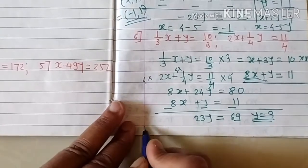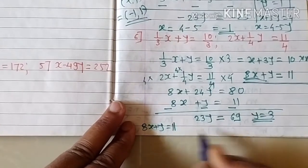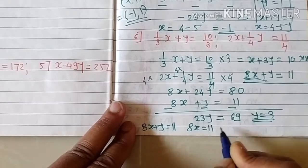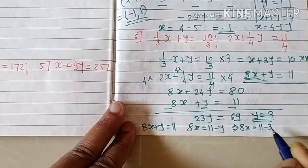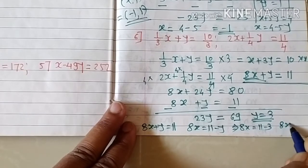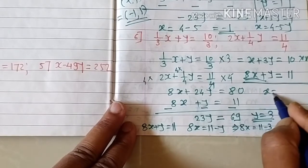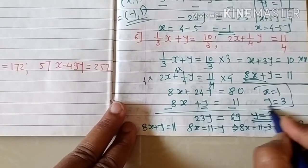Substitute y equals 3 into the equation 8x plus y equals 11: 8x equals 11 minus y equals 11 minus 3 equals 8. So 8x equals 8, giving x equals 1. The solution is x equals 1 and y equals 3.